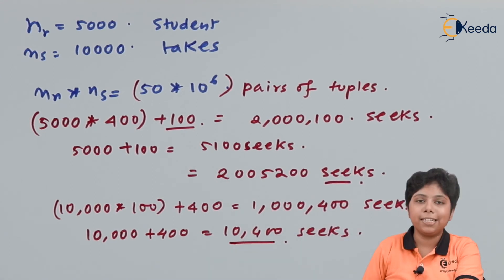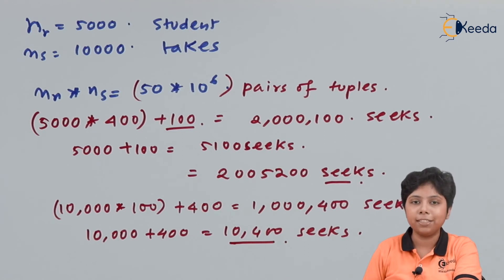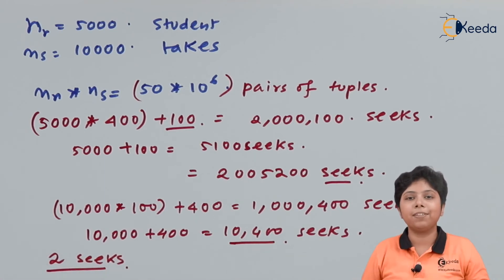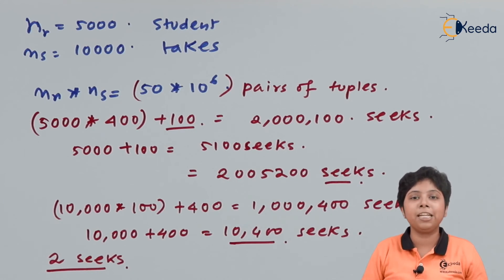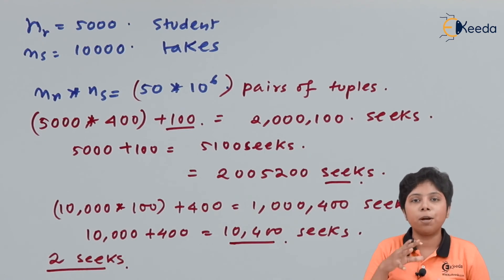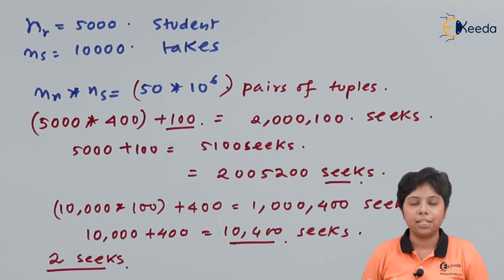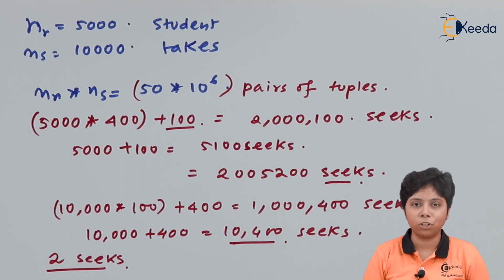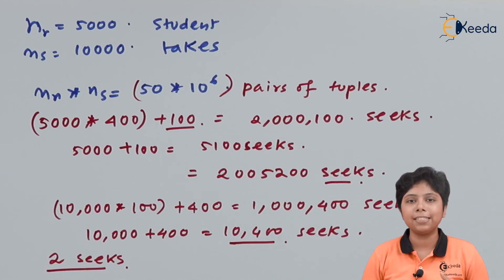In the worst case we have a very large number of seeks, while in the best case we need only 2 seeks. This motivates the use of block nested loop join as an improvement. In block nested loop join, we transfer data block-wise rather than tuple-wise, improving performance significantly.